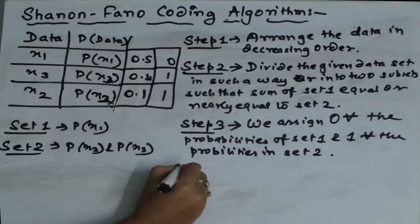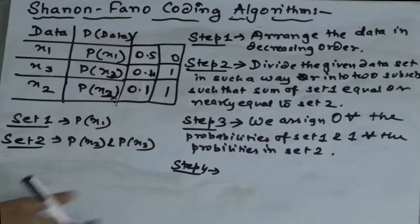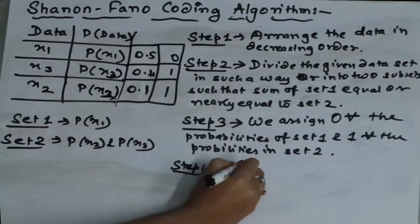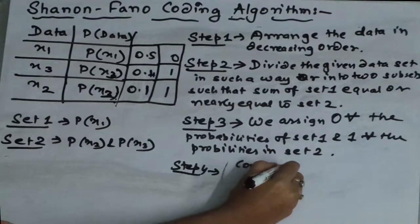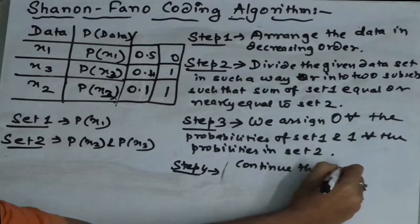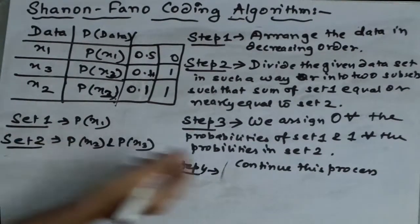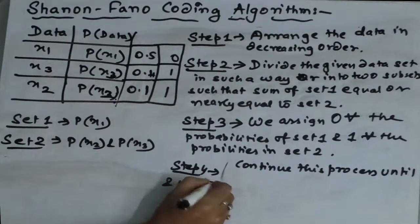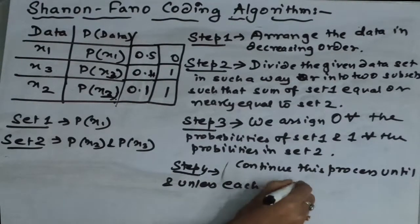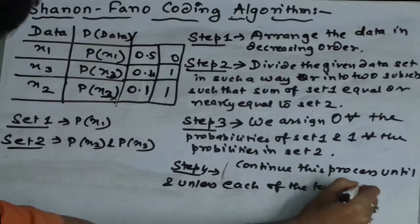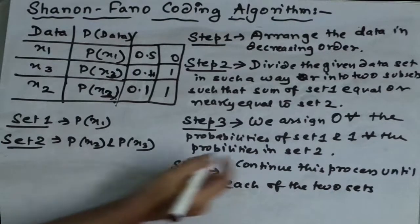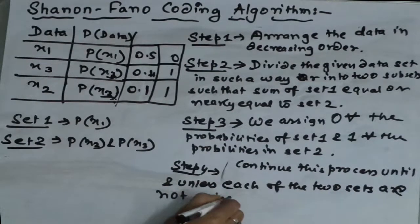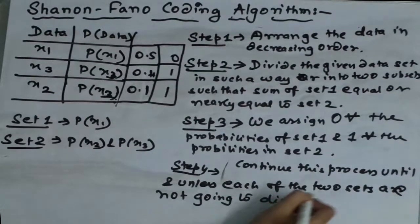Again in step four, what we have to do? We have to continue this process until and unless each of the probabilities of the two sets are not going to divide anymore.